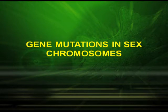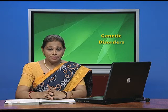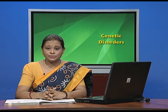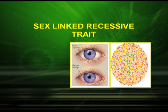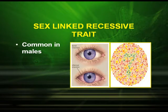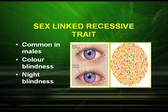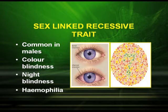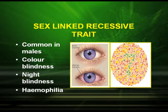Now let us discuss gene mutations in sex chromosomes — that means the mutations are linked with the sex chromosomes. First, let us discuss sex-linked recessive traits. These traits are common in males, and good examples are color blindness, night blindness, and hemophilia. As in the picture, you can see the color blindness difference — the patient cannot differentiate between red and green. In night blindness, the patient cannot see in dim light. And in hemophilia, the bleeding does not stop.